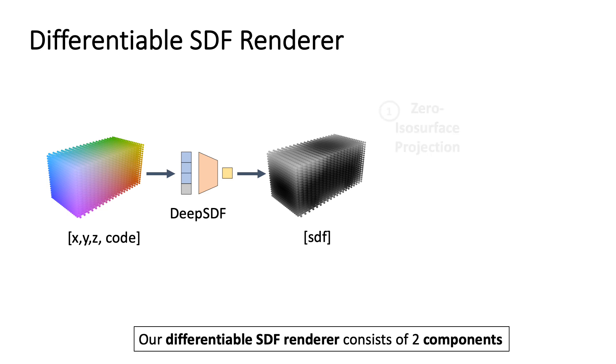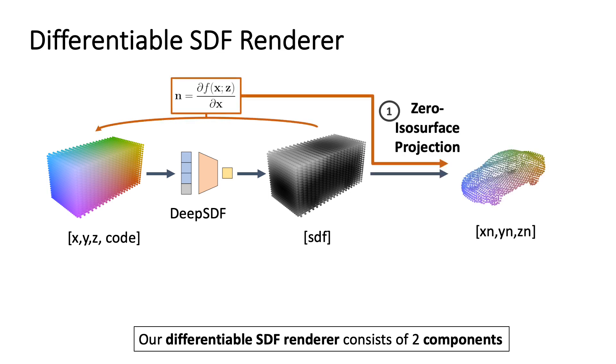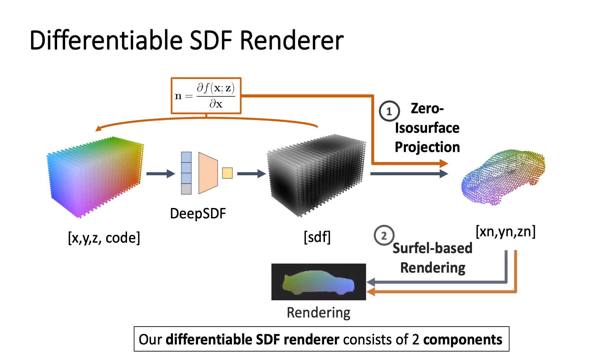It consists of two components: the zero isosurface projection which moves the input grid points onto the object's surface, and the surface-based renderer which outputs a watertight rendering of the object.